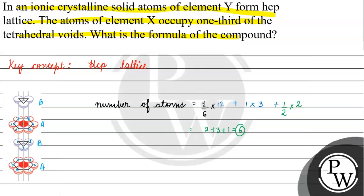So, we can write this. How many atoms? 6 atoms. Now, let's talk about the element X. Atoms of element X.